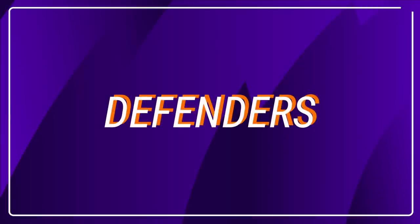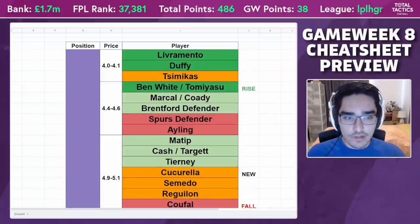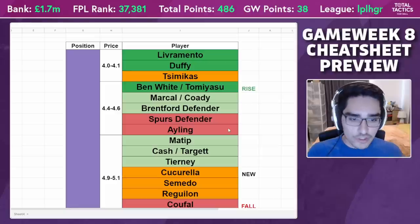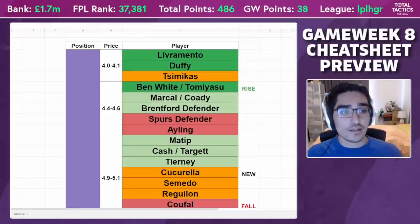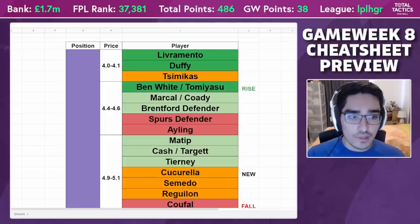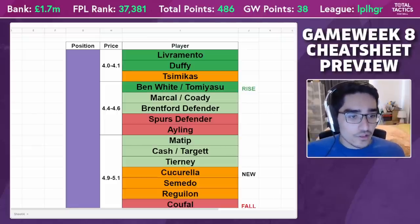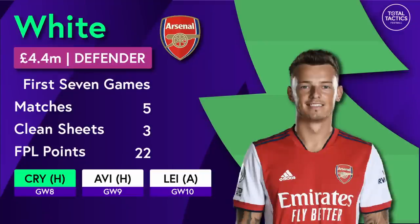Let's look at the cheat sheet, starting with defenders. There's been quite significant movement, and a lot of it has to do with a change in which teams are the most interesting. Defensively, Arsenal has been steadily on the rise. Whilst this is probably the last end of their great fixtures, the ability to access Arsenal defenders at a very cheap price is still worthwhile. Someone like Ben White or Tomiyasu still holds great value as a fourth defender — they could easily be your third defender, as we saw last week when they kept a clean sheet.